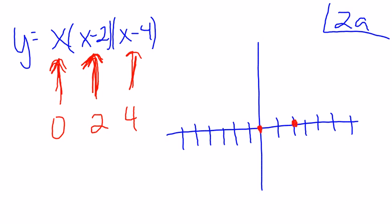These are all x equals zero, two, and positive four.